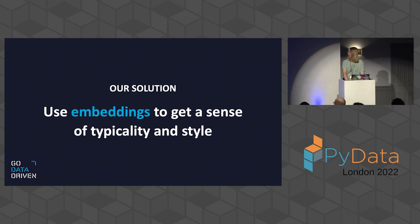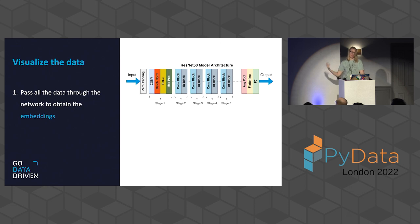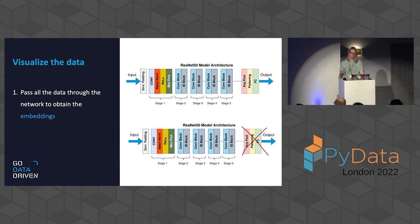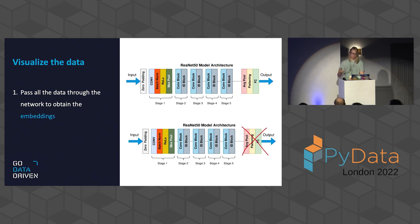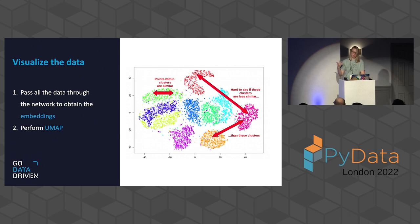Next, we used embeddings to get a sense of typicality and style. We passed the data through ResNet-50 and removed the head of the network — where features extracted by the convolutional layers are converted to output predictions — ending up with embeddings, numeric values that describe the image. Embeddings representing similar images should be more similar to each other. These are highly dimensional, so we used UMAP for dimensionality reduction to get back to two dimensions, then visualized with Altair specifically because it provides nice interaction.